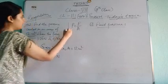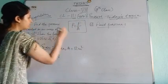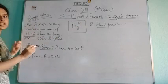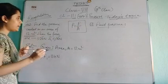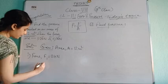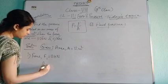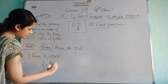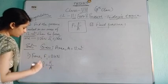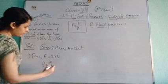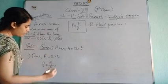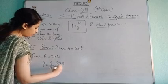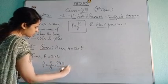The relation between force, pressure, and area is P equals F by A. So let us call it P1. P1 equals F1 divided by A, that is 24 Newton by 12 meter squared.